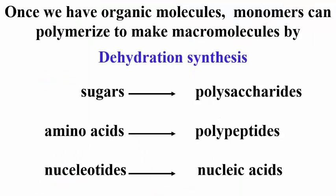Let's remind ourselves of how monomers polymerize by dehydration synthesis — that is condensation reactions — to make polysaccharides, polypeptides, and nucleic acids. These water removal reactions characterize polymer formation.